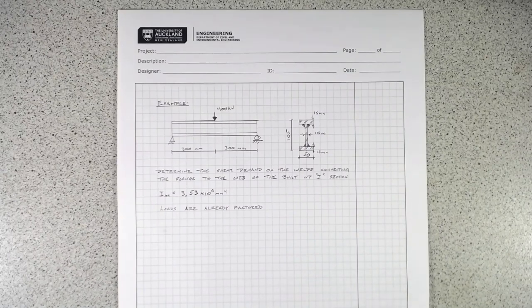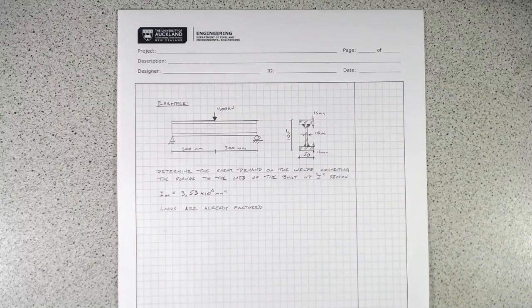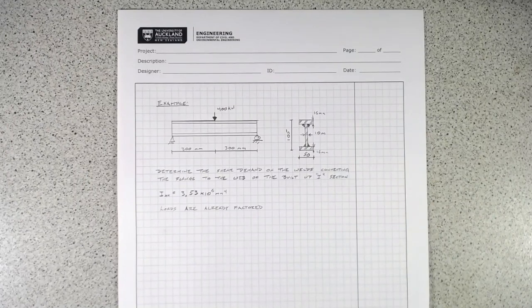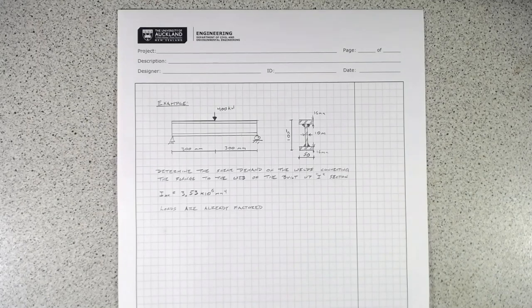This first example won't really look at the standards equations because we're just trying to find a demand. This was one of the things we said we would look at for shear in steel members. One is determining the shear capacity, but the other is determining the demand on welds of a built-up section through shear flow. As you can see in the example here, we have a rather short, stout built-up section.